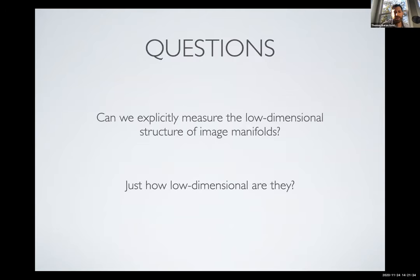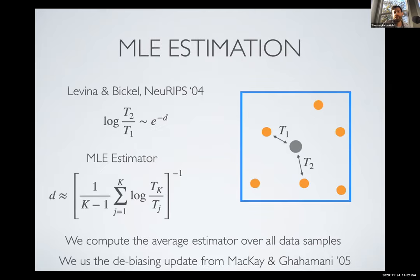Some questions I'd like answers to: Can we explicitly measure the low-dimensional structure of these manifolds? Can we use dimensionality estimation methods to pull out what those dimensions are? And just how low-dimensional are they? If we can apply these tools to image manifolds, can we say something quantitative about how low-dimensional these things are? There are methods that are really effective at estimating the implicit dimensionality of manifolds, and we have a paper examining a few different methods.